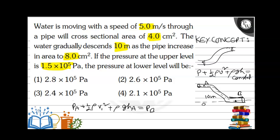At point B, that is pressure at B — which is what we need to calculate — plus half rho v_B squared plus rho g h_B. Since h_B is zero from this reference level, that term vanishes. We also use the equation of continuity: A1 v1 equals A2 v2, which is always constant. So v2 can be easily calculated from this formula.